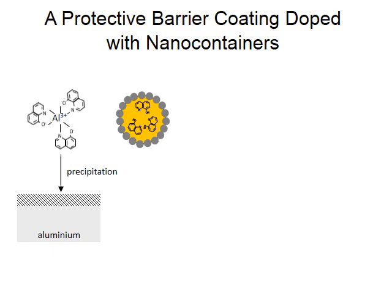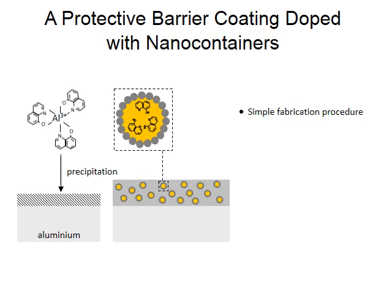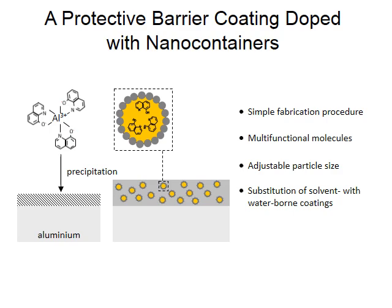We fabricate particle-stabilized, inhibitor-filled capsules and transfer them into a barrier coating on top of an aluminum surface. Our capsules should be easy to manufacture and inexpensive, making use of multifunctional molecules. We also want to control the size of our capsules, since barrier coating thickness can range from hundreds of nanometers up to hundreds of micrometers, and our capsules should fit into even the thinnest coatings. We focus on environmentally friendly waterborne coatings and use less problematic organic corrosion inhibitors as alternatives to cancer-causing agents like hexavalent chromates.